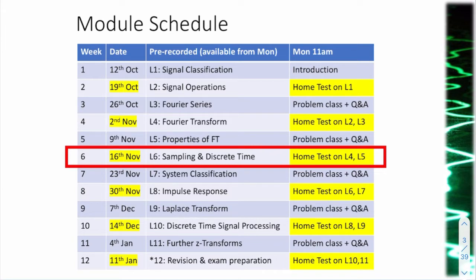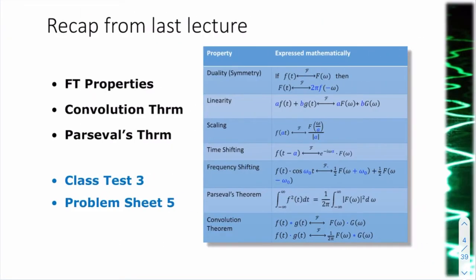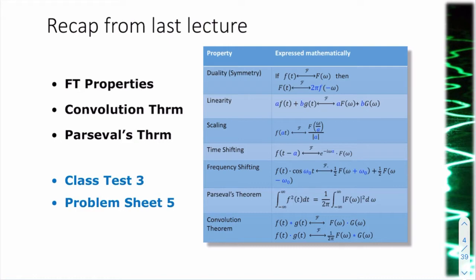Starting from this test onwards, you'll find that they're easier. The test you just completed was the hardest test. Just a quick reminder of what we completed last week: we finished talking about the Fourier transform and the properties of the Fourier transform. You've seen through the problem sheets and through the test how these properties make fairly complicated questions really easy.